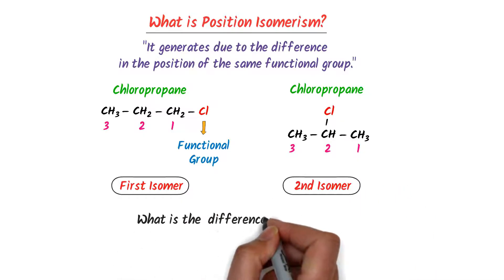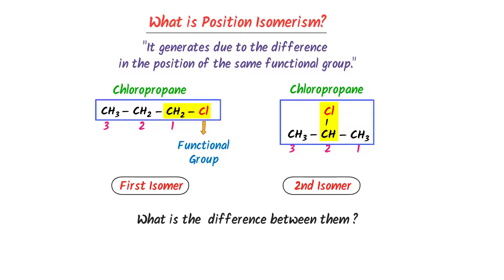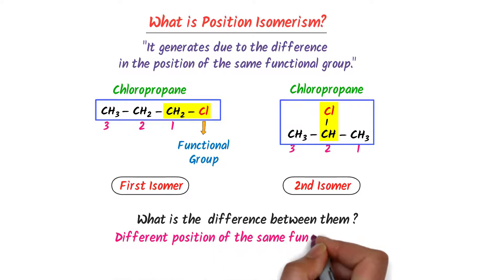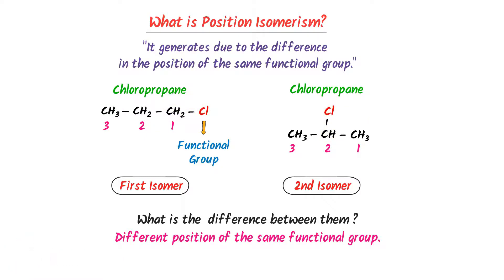This is the second isomer of chloropropane. What is the difference between these two compounds? In this compound, chlorine is present at the first carbon, while in this compound, chlorine is present at the second carbon. The only difference between these two compounds is the different position of the same functional group, chlorine. Note these two position isomers of chloropropane.